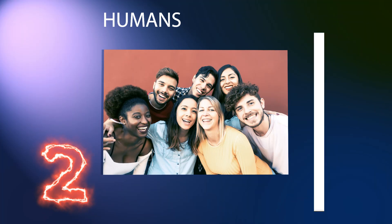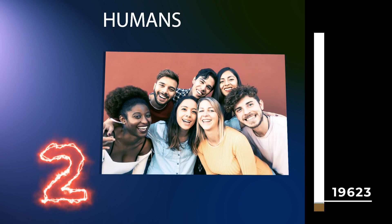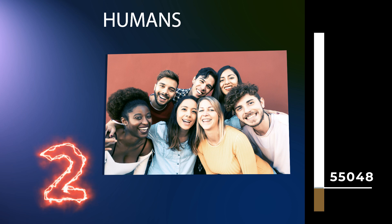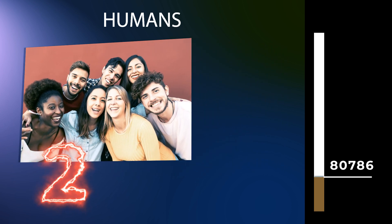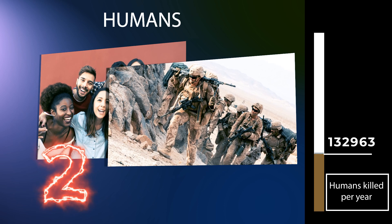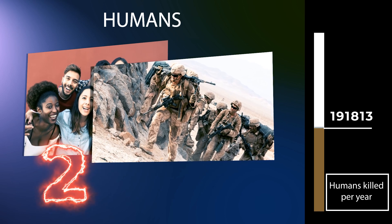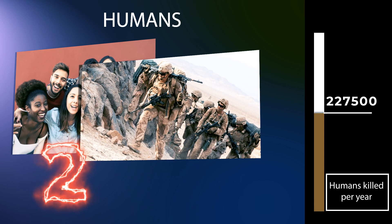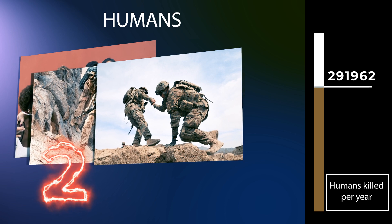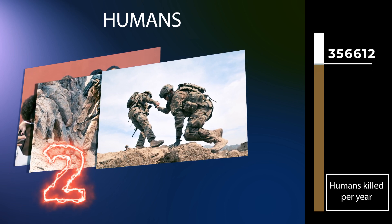Humans commit violence on other humans at a rate comparable to other primates, but have an increased preference for killing adults, with infanticide being more common among other primates. It is predicted that two percent of early Homo sapiens would be murdered, rising to 12 percent during the medieval period, before dropping to below two percent in modern times. There is great variation in violence between human populations. One school of thought holds that war evolved as a means to eliminate competitors and has always been an innate human characteristic. Another suggests that war is a relatively recent phenomenon that appeared due to changing social conditions.